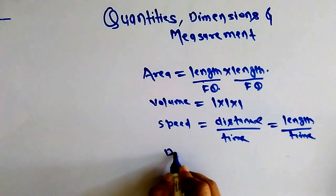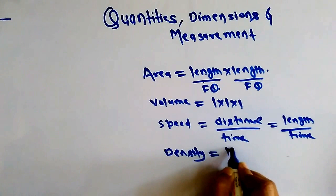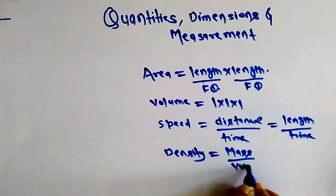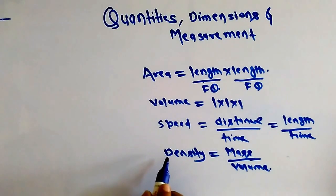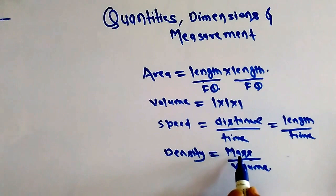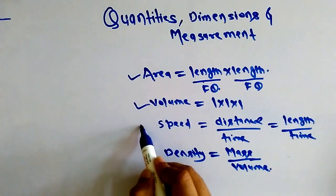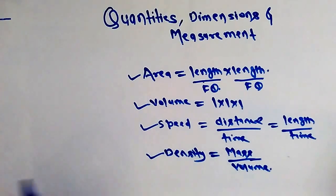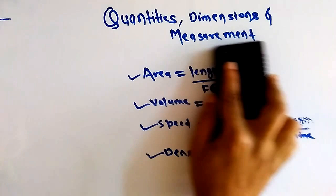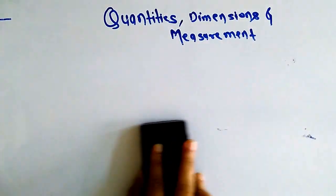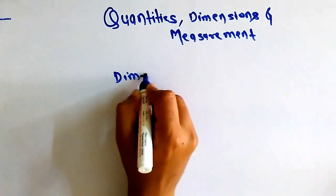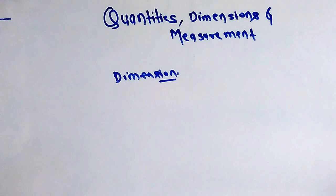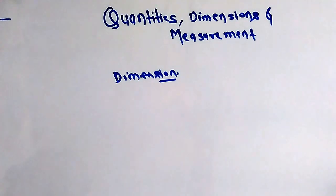Another example: density equals mass per unit volume. Mass is a fundamental quantity and volume is a derived quantity, so density also depends upon fundamental quantities and is a derived quantity. These are all examples of derived quantities. Today I am stopping here, and in the next class I will explain what dimension is. Please continue with me in the next video. Thank you.